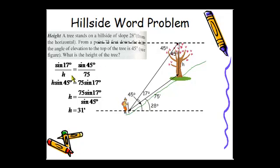Since it's a proportion, we cross multiply. We get this. We're trying to solve for H. So we divide by sine of 45. And then using our calculator in degree mode, we calculate this expression. And if I round it to the nearest whole foot, we get the height is 31 feet.